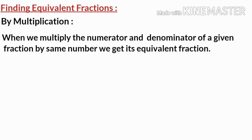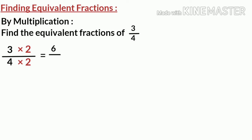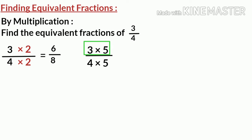To understand this better, let us solve a question: find the equivalent fractions of 3 by 4. To find the equivalent fractions, we will first multiply the numerator and the denominator of the fraction by 2. So, 3 multiplied by 2 gives 6, and 4 multiplied by 2 gives 8. Now let's multiply by 5: 3 multiplied by 5 upon 4 multiplied by 5 is equal to 15 upon 20.